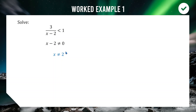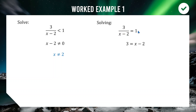To find other critical values, we replace the inequality sign with an equals sign and solve the equation. Multiplying (x − 2) across the right gives 3 = x − 2, and adding 2 to both sides gives x = 5 as our other critical value.